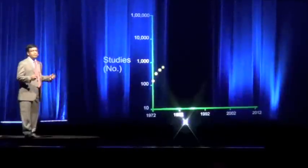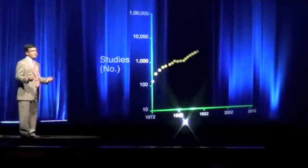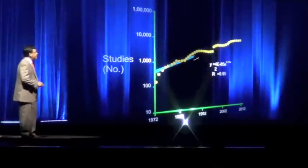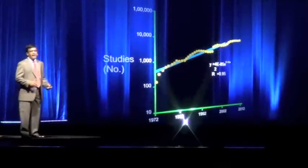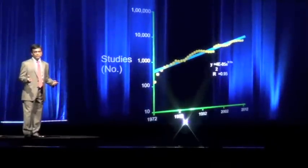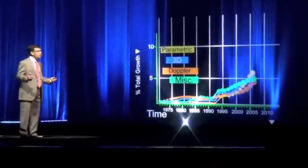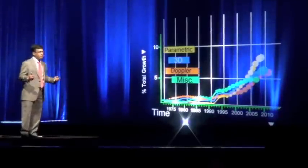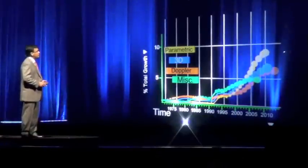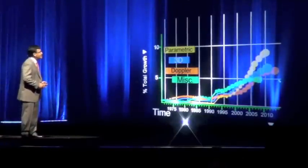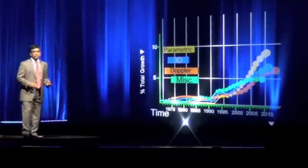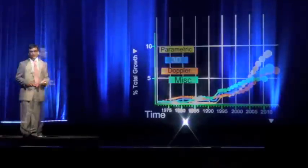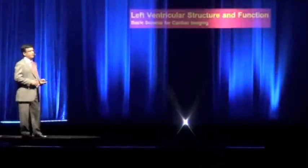If the number of publications from Scopus is an index of growth in the field, then you can clearly see an exponential trend here. Metrics like tissue doppler, strain, displacement, and velocity started growing and exceeded, somewhere in the years of 2003-2004, all the other disciplines.